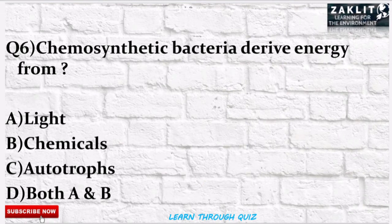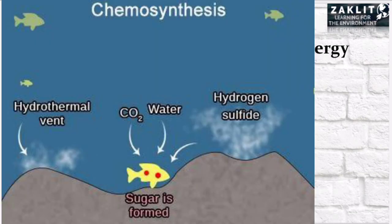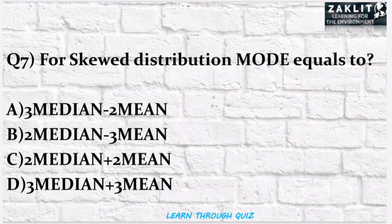For the chemosynthetic bacteria question, the correct option is B. As the term suggests, chemicals are used to prepare food. For example, hydrothermal vents release hydrogen sulfide, which is combined with carbon dioxide and water to make sugar — the food source for organisms in that environment.